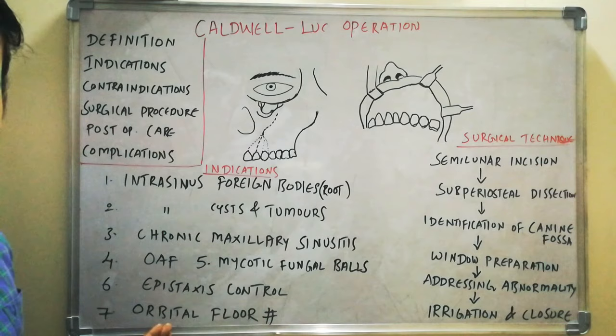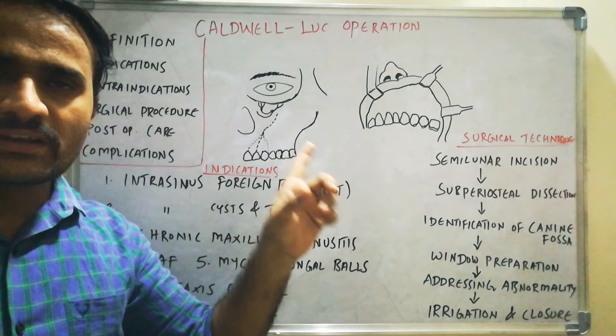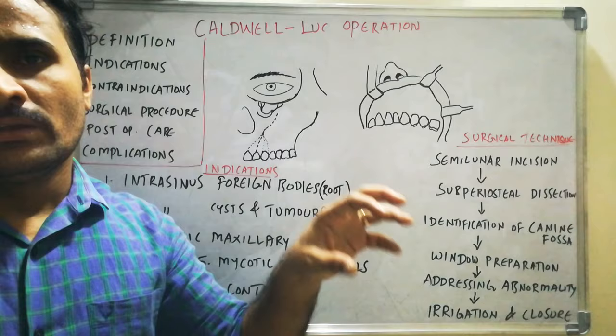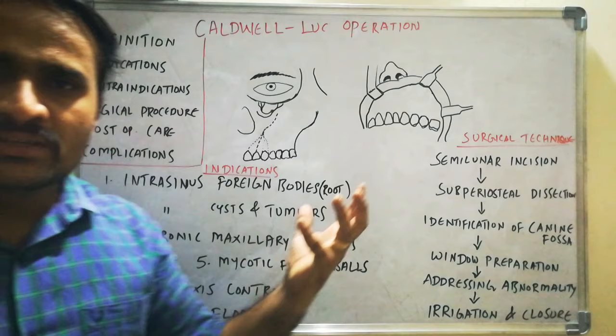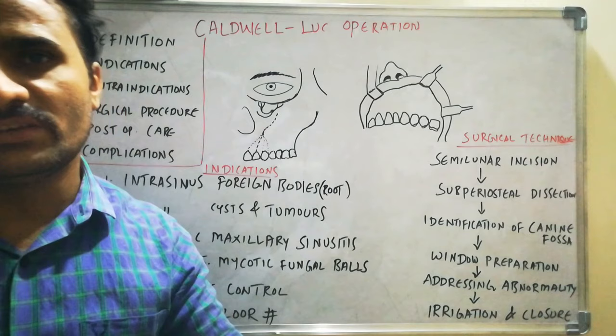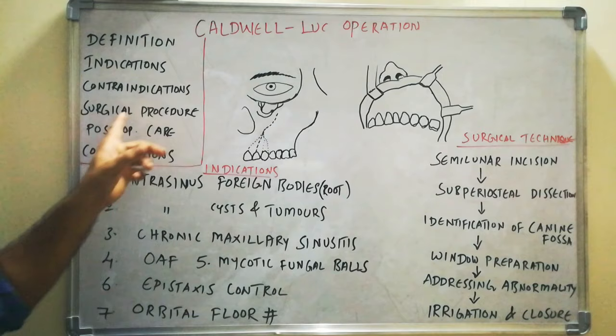Coming to the Contraindications: this procedure is generally not done in young children due to the fear of injury to the developing permanent tooth buds. It is also generally not done in cases of acute infections — it is done in chronic infection cases, not acute. So those are the two contraindications. Then coming to the Surgical Procedure.